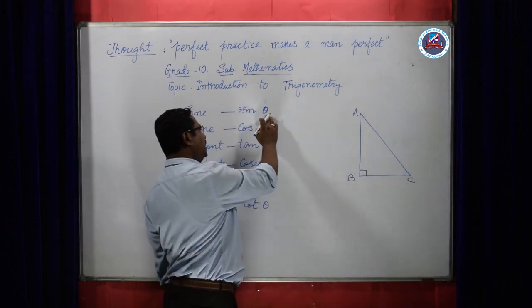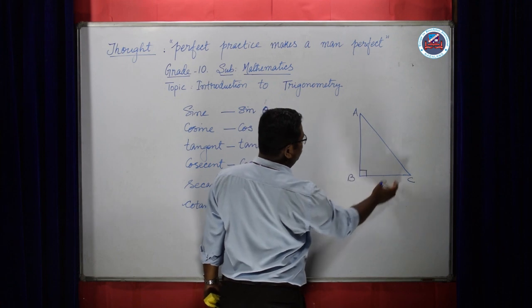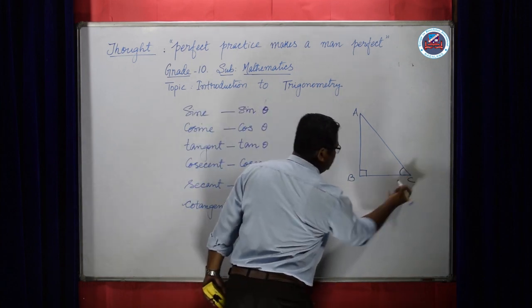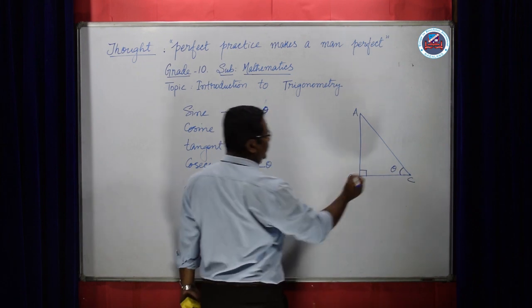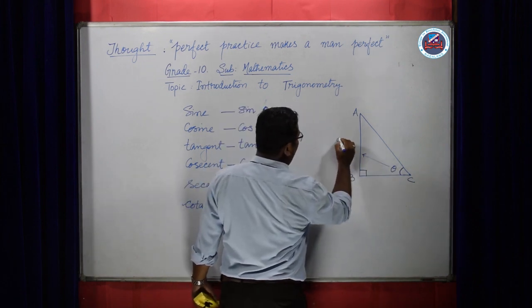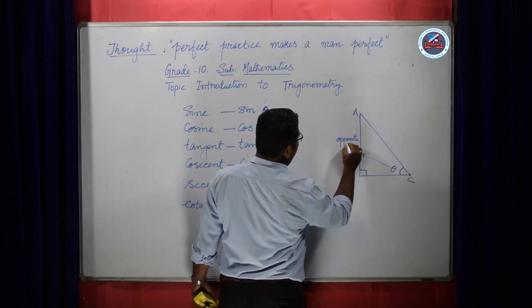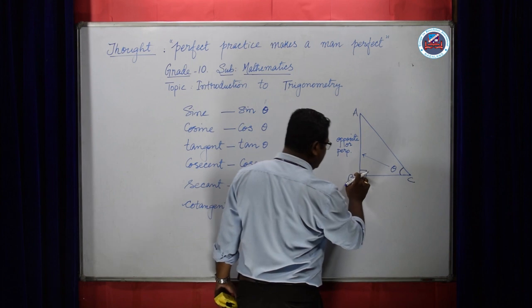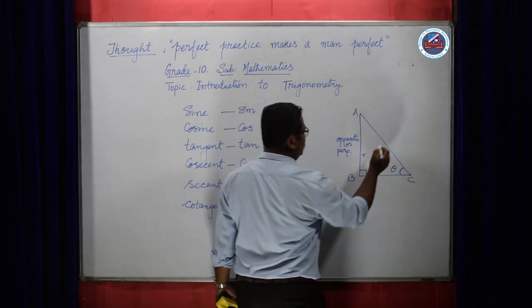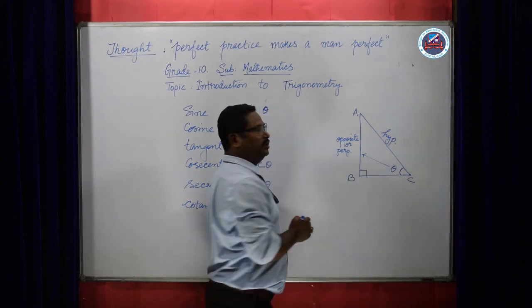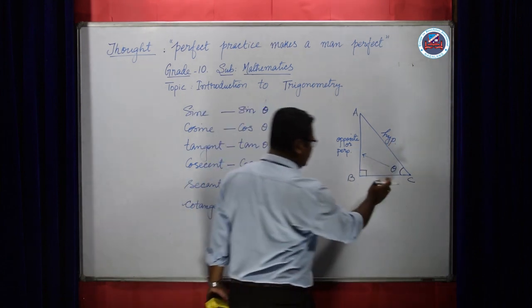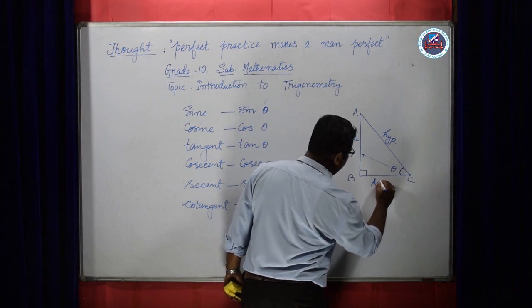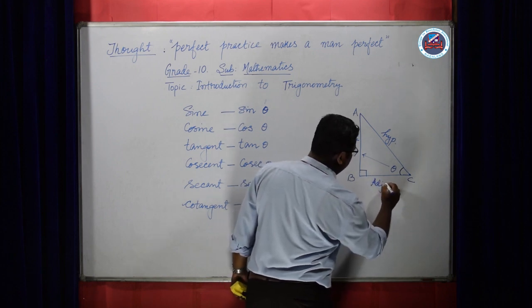Then the other two are less than 90 degrees, so they are called acute angles. This acute angle is theta — you can place it at angle A or at angle C, that is your wish. Suppose I am placing this angle at vertex C and taking it as theta. Then side AB will be called the opposite side or perpendicular. Opposite of 90 degrees is AC, called hypotenuse. The line adjacent to angle theta we call the adjacent side or base.